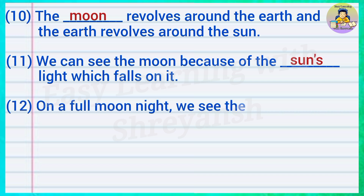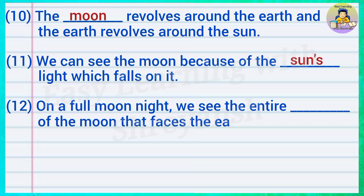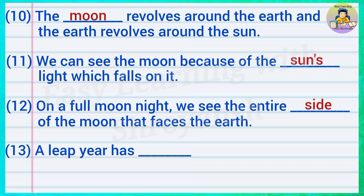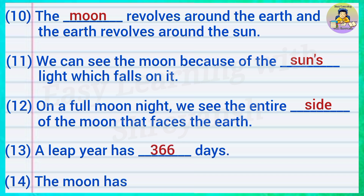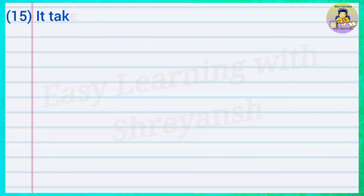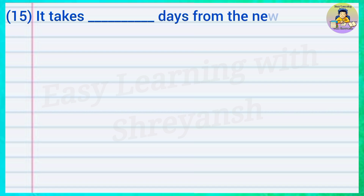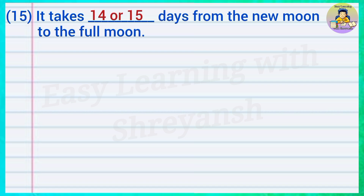Twelve: On a full moon night we see the entire — of the moon that faces the earth; answer: side. Thirteen: A leap year has — days; answer: 366. Fourteen: The moon has no — of its own; answer: light. Fifteen: It takes — days from the new moon to the full moon; answer: 14 or 15.